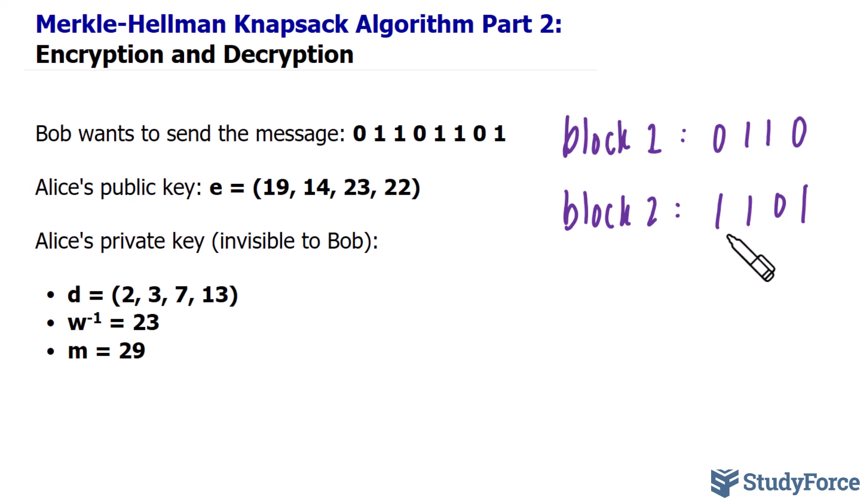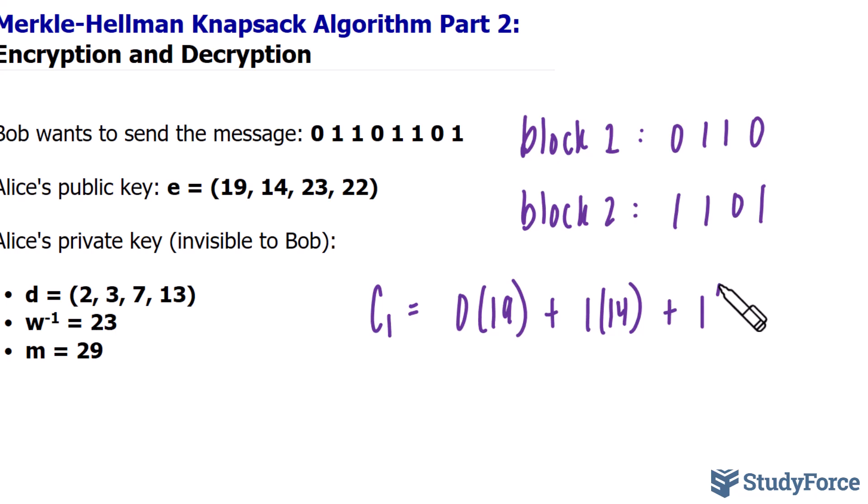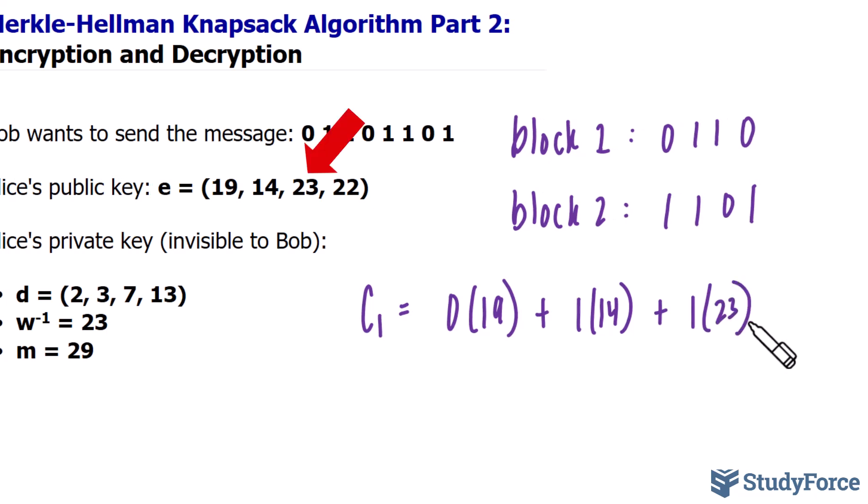Let's produce the first ciphertext. I'll call it C1. This is found by taking each bit one at a time and multiplying it to the terms in the public key. So I'll take 0 and multiply it to 19, add to that 1 times 14, plus 1 times 23, plus 0 times 22.